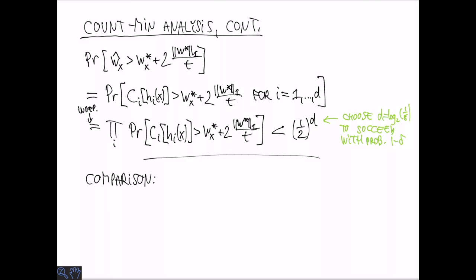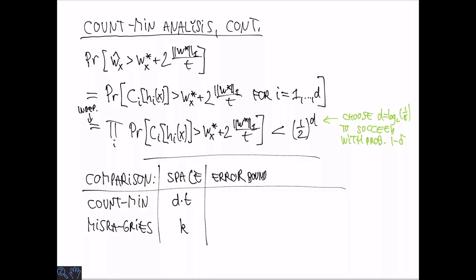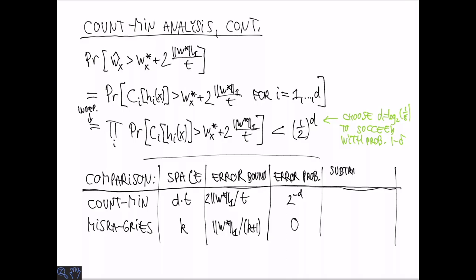It's instructive to compare the properties of count-min and Misra-Gries. The space usage for count-min is d times t counters and Misra-Gries it's k but it's k pairs. So the unit is different. The error bound for count-min is twice the L1 norm divided by t. And for Misra-Gries it's the L1 norm divided by k plus one. The count-min has an error probability of two to the minus d whereas Misra-Gries is deterministic and doesn't have an error probability or if you like it's zero.